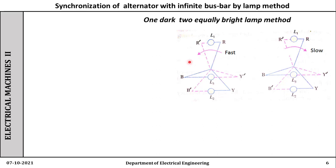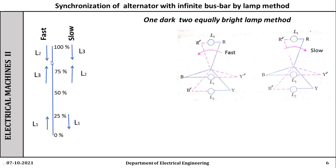Say the incoming machine is fast. Then the phasors of magenta color — that is, the incoming machine's phasors — are running in a counterclockwise direction. Observe the voltage between R and R dash, to which lamp L1 is connected. When the phasor is running counterclockwise — meaning the machine is faster — the voltage across lamp L1 is just starting to increase. The lamp does not glow if the voltage across it is less than 25 percent; it remains dark.